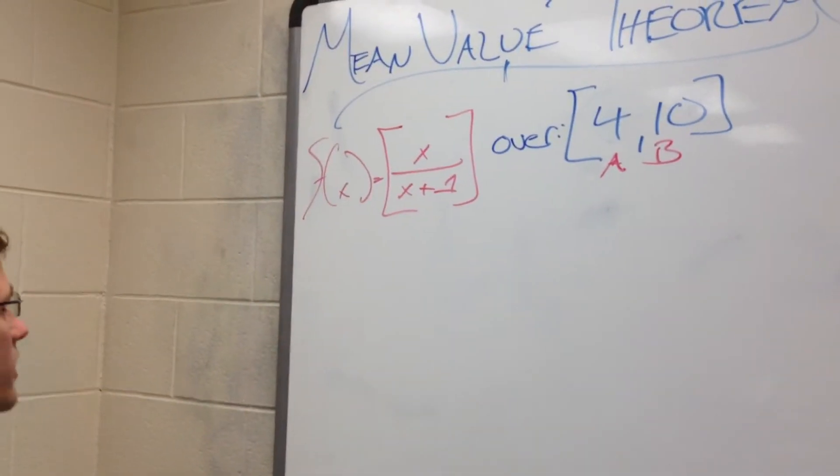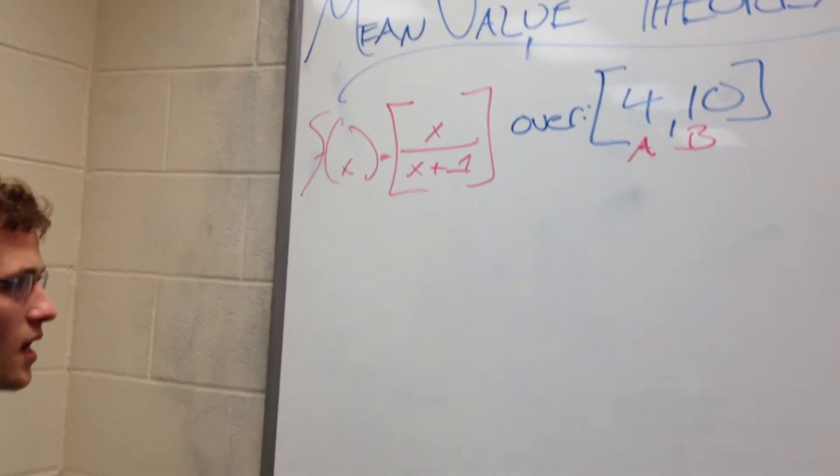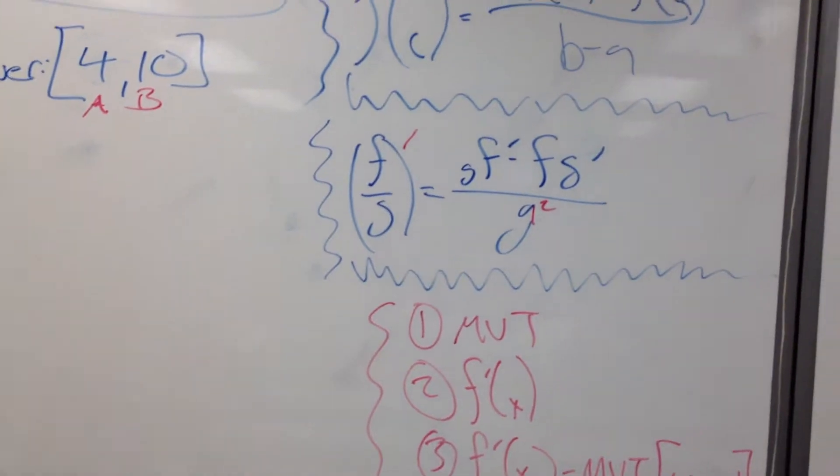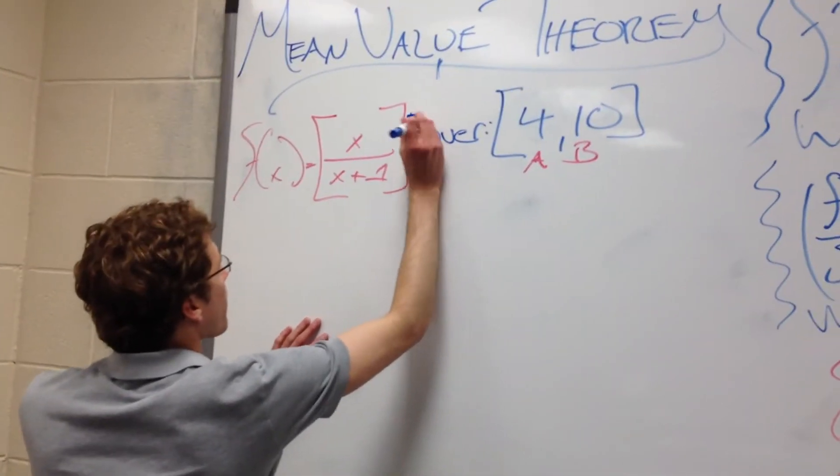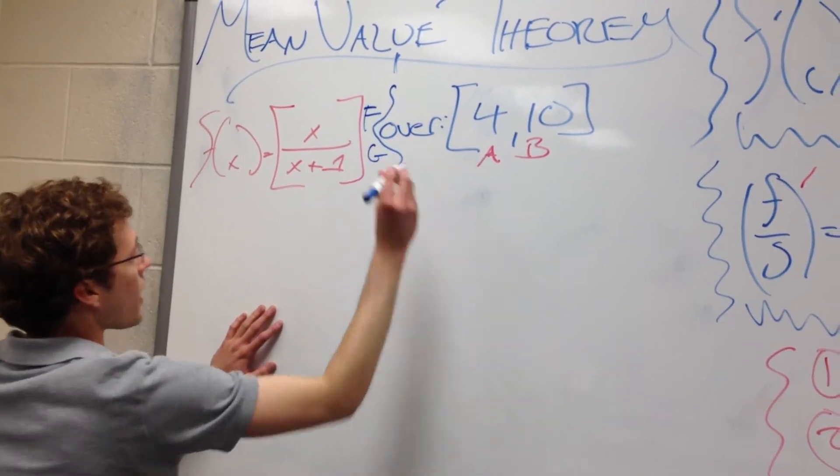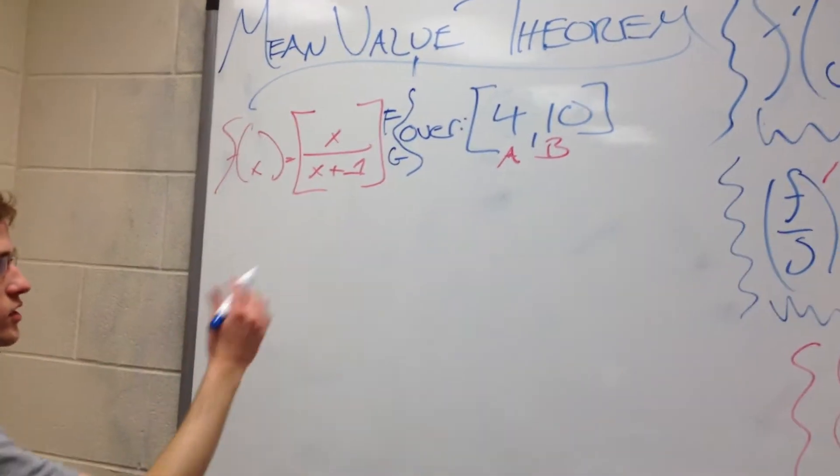All right, probably looks worse now than it did, but it's all right. We know what we're doing. So, f over g prime. Let's go ahead and label this. This is going to be our f. This is going to be our g.